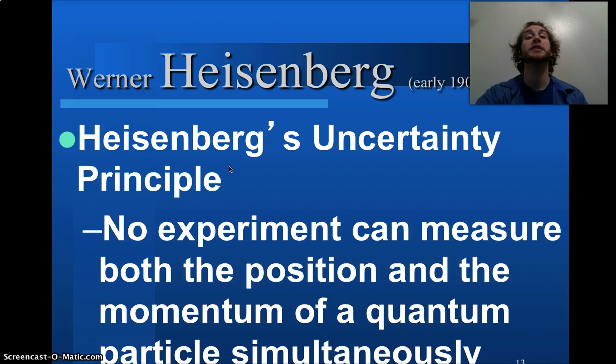The momentum has been removed, so no experiment can measure both the position and the momentum of a quantum particle or of an electron at the same time. We call this the Heisenberg uncertainty principle. You can't know both. You just can't.